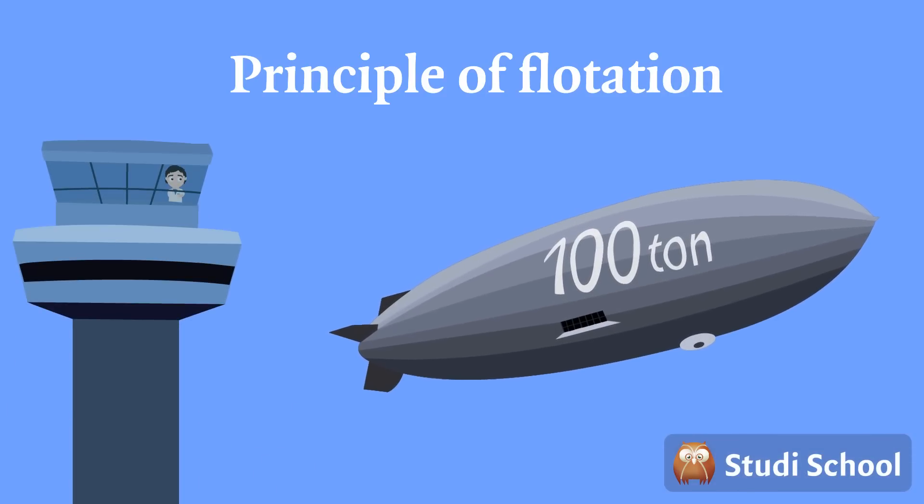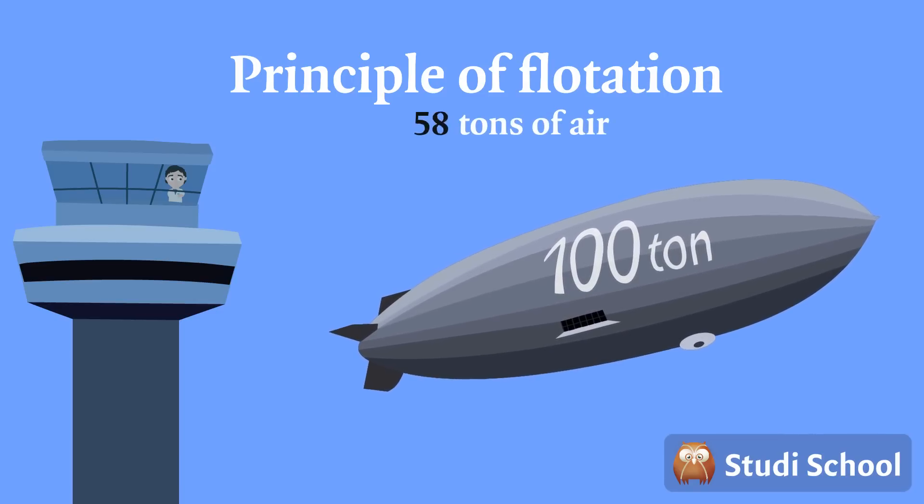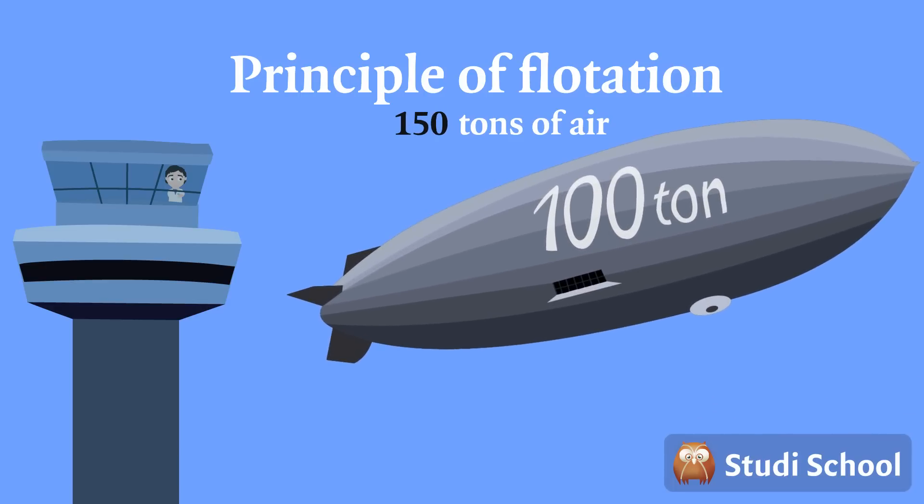The same is true for vessels in the air, as air is a fluid. In order for this 100-ton dirigible to float, it must displace at least 100 tons of air. If it displaces more, it rises.